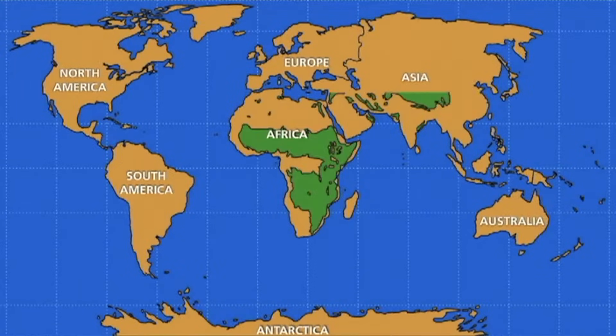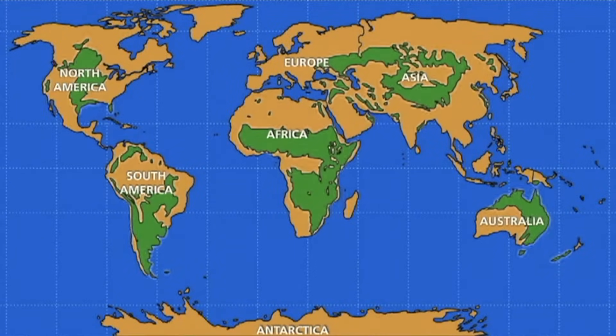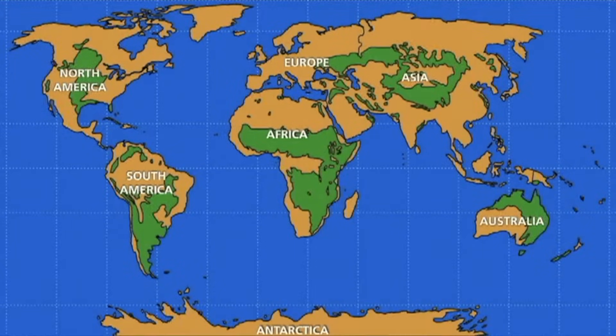Grasslands are found in North America, South America, Africa, Europe, Asia, and Australia.